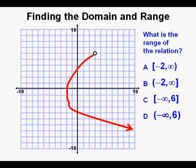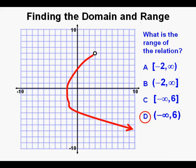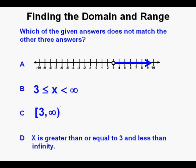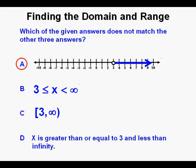What is the range of this relation in interval notation? Stop the video and answer the question then restart it to see if you got it right. The correct answer is D — the range is greater than negative infinity and less than 6. Now for this problem, which of the given answers does not match the other three? The correct answer is A: in answer A it is graphed as greater than 3, while all the others are greater than or equal to 3.